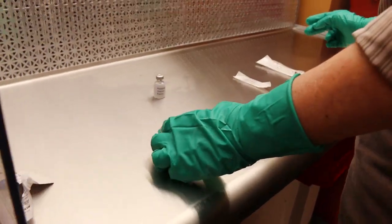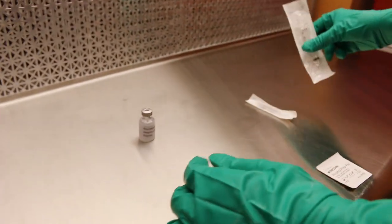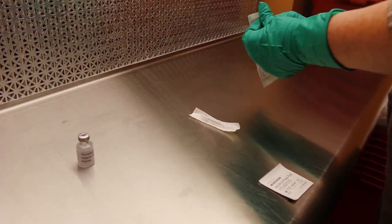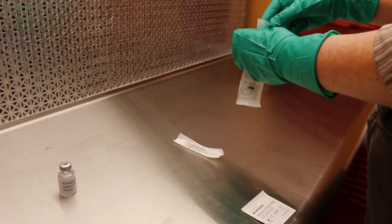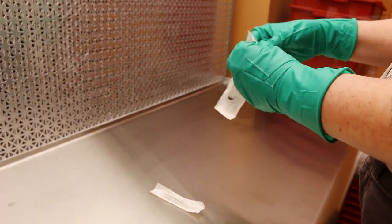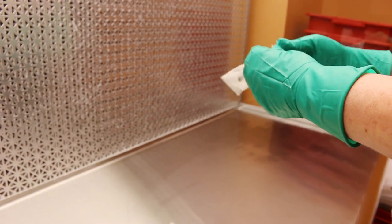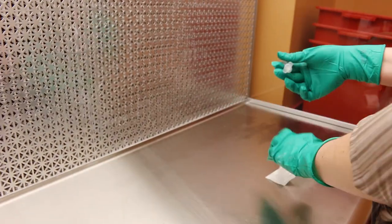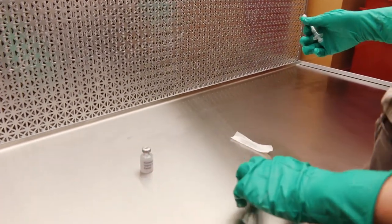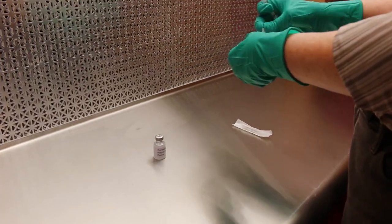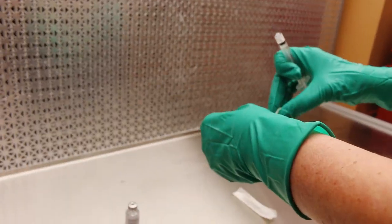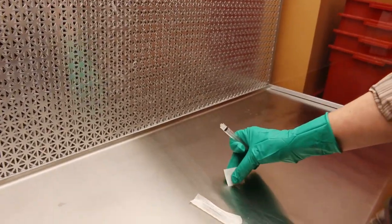Step eleven, bring the syringe into the direct compounding area, and remove the outer wrapping without touching or shadowing the syringe tip. Dispose of the syringe wrapper in the discard pile. Step twelve, open a sterile alcohol swab and place it on the work surface of the hood, and discard the wrapper in the discard pile.